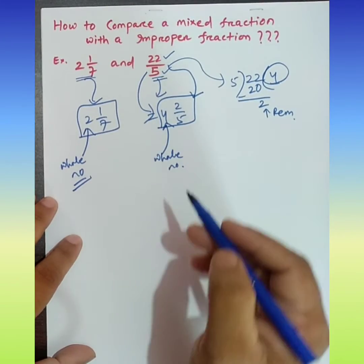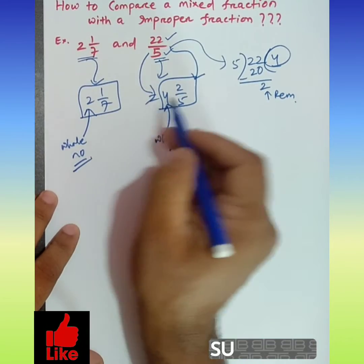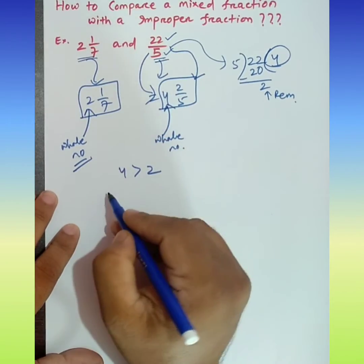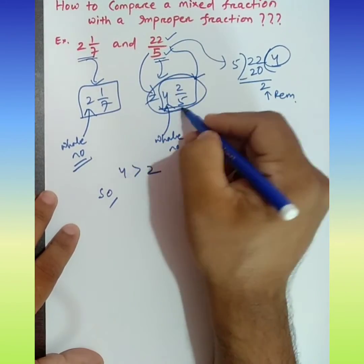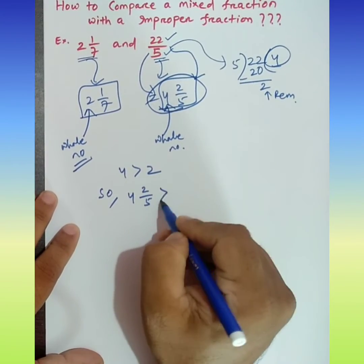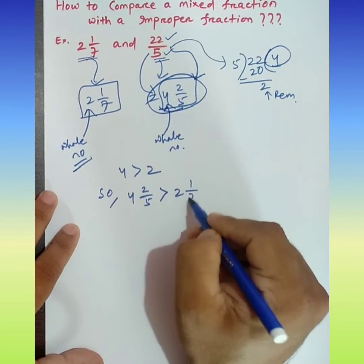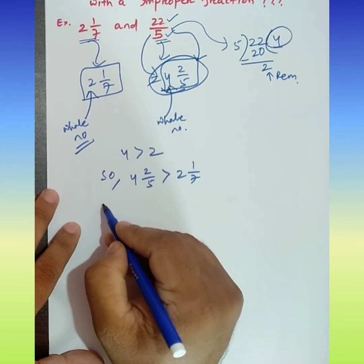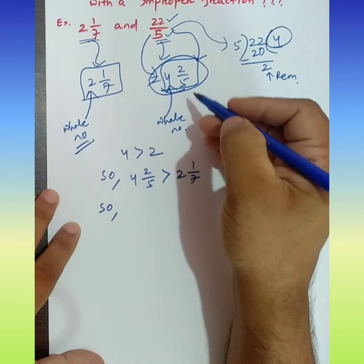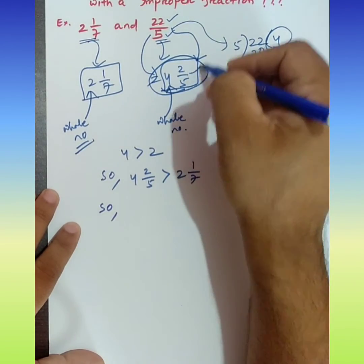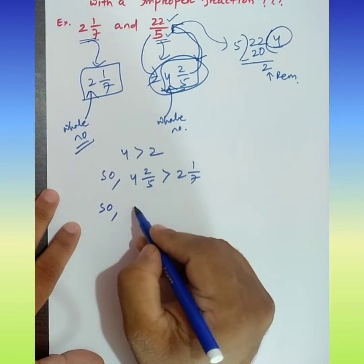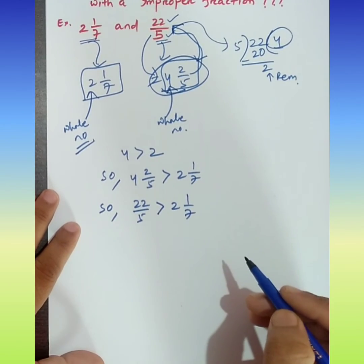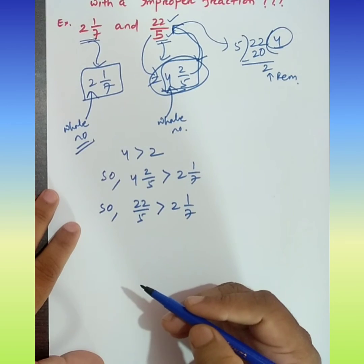Comparing 2 and 4: since 4 is greater than 2, we can say that 4 whole 2/5 is greater than 2 whole 1/7. Since 4 whole 2/5 represents 22/5, we can conclude that 22/5 is greater than 2 whole 1/7.